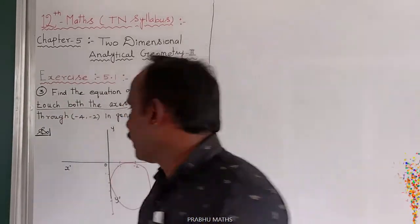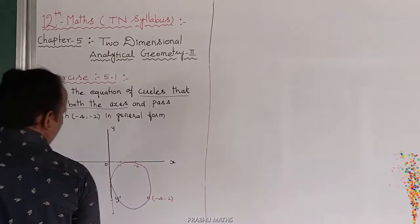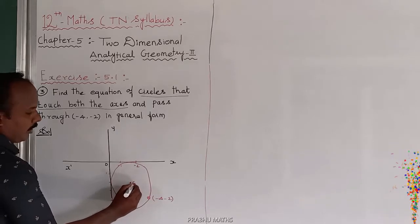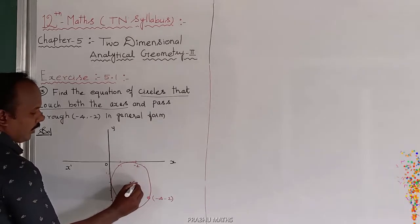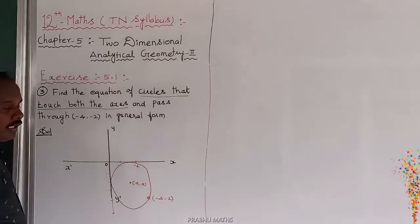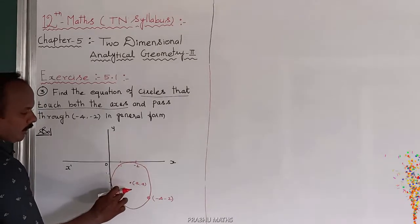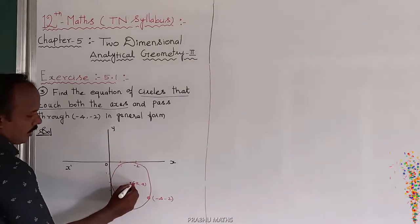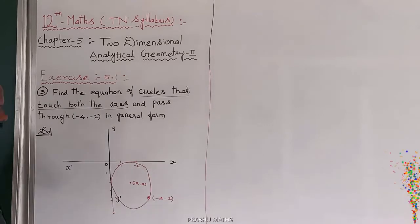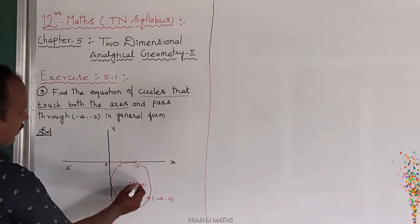Next, find the value of the center. The center is denoted by a comma a. Since the circle is in the third quadrant, the center becomes minus a comma minus a — the distance to the x-axis is a and to the y-axis is also a.